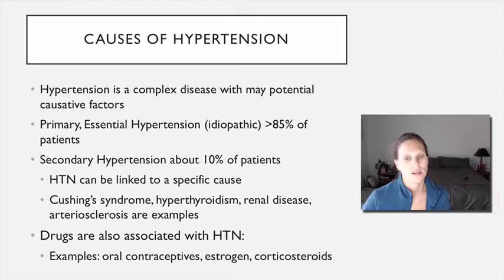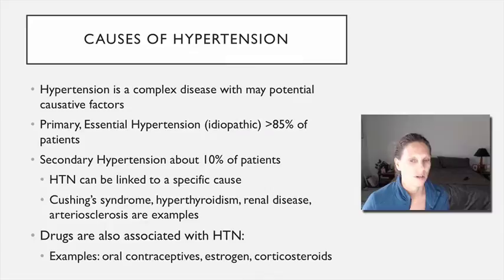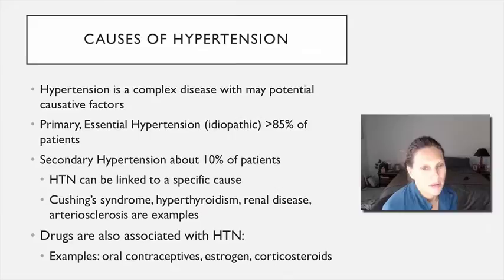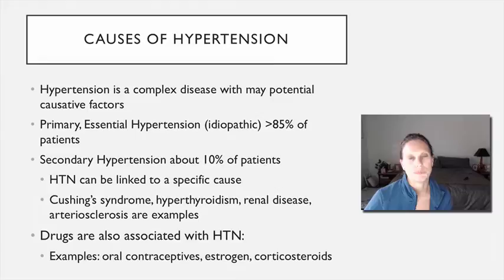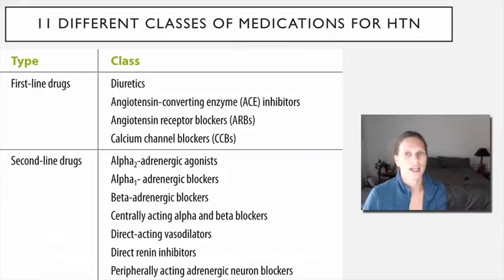We also can't forget about drugs. People on various types of medications can see their blood pressure escalate. Common examples include oral contraceptives and estrogens, which can increase blood pressure, corticosteroids, which can do so quite significantly, and other drugs used for allergies — such as nasal sprays — that can raise blood pressure in susceptible individuals.